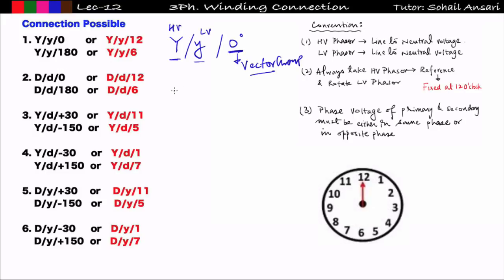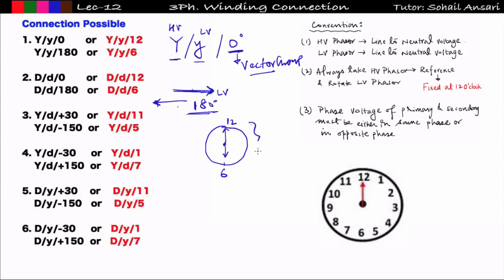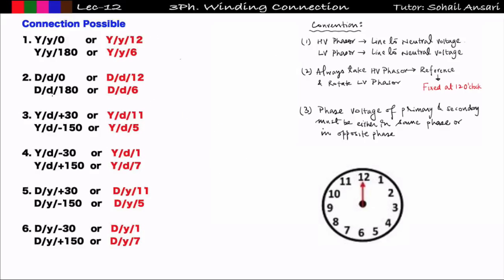For YY180 (or YY6): if the LV side line-to-neutral voltage is along the x-axis, the HV side is 180 degrees opposite — a 180-degree phase difference. In clock form, if the HV (minute hand) is at 12, the LV (hour hand) is at 6 — representing 180-degree displacement. So YY180 and YY6 are the same; YY0 and YY12 are the same.